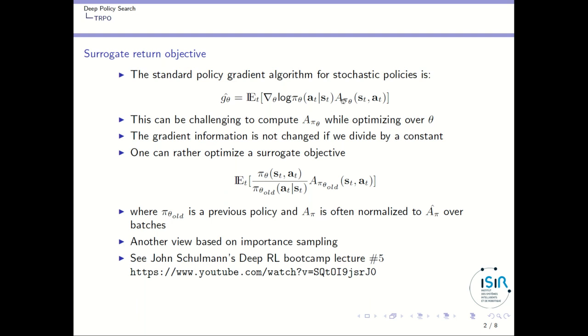One point is that this can be challenging to compute the advantage function for the policy that you are currently improving, the one on which you are applying the gradient descent. So it's challenging to compute this advantage while optimizing over theta. We will rather try to compute the advantage using the previous policy P_theta_old.